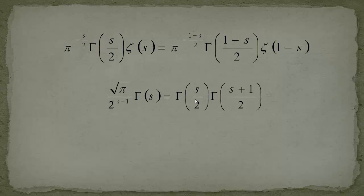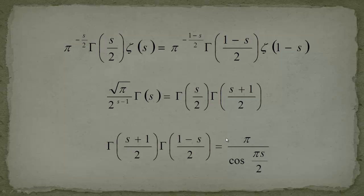The second ingredient is a formula that looks similar to the Legendre duplication formula — it's obtained by replacing s by s/2 in the Legendre duplication formula. The third ingredient is the Euler reflection formula, modified slightly — you'll see a cosine appearing instead of a sine — and we'll show these two ingredients in more detail on the next slides.